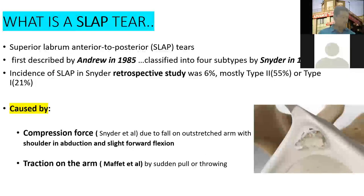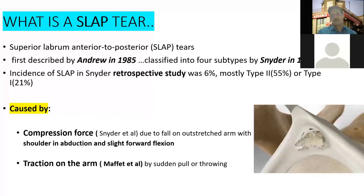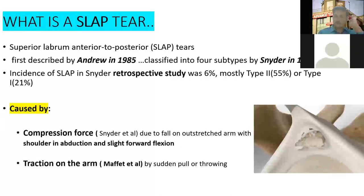This was first described by Andrews in 1985. Later, it was Snyder who classified the SLAP tear into four types, with some other types added recently. In Snyder's retrospective study, the incidence was 6%, and among them, type 2 occupies the major percentage of injuries, with type 1 at 21%.